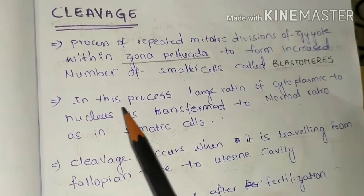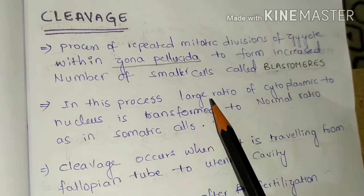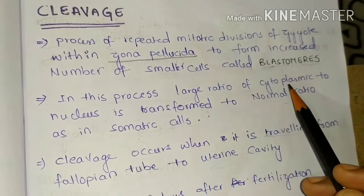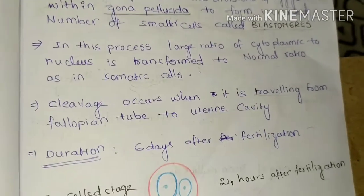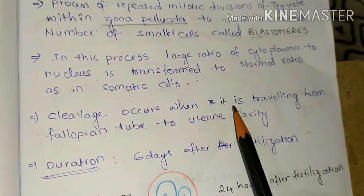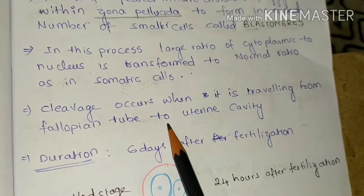The process of cleavage is helpful to the formation of large ratio of cytoplasmic to nucleus into normal ratio as seen in somatic cells, and the cleavage occurs when the zygote is traveling from fallopian tube to uterine cavity.